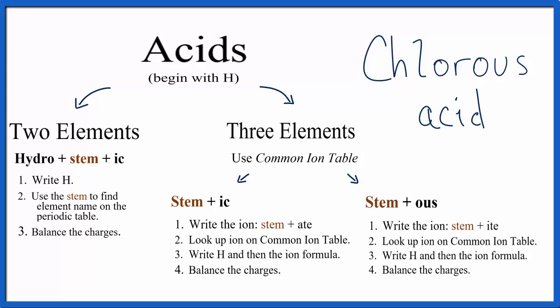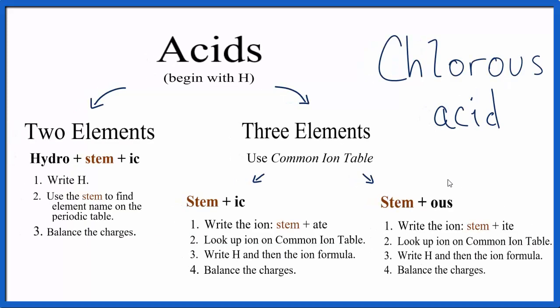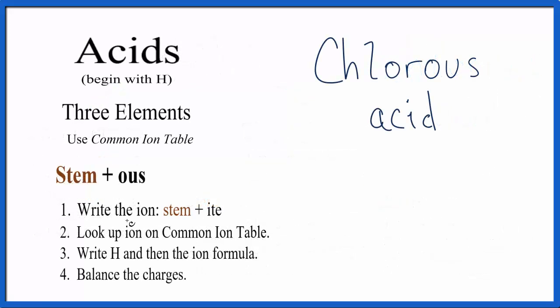So pause and write the formula for chlorous acid. For chlorous acid we'll use these rules right here since it ends in ous. So we write the stem, the C-H-L-O-R, and then we change the ous to I-T-E. That gives us the chlorite ion, so now we go back over to the common ion table.